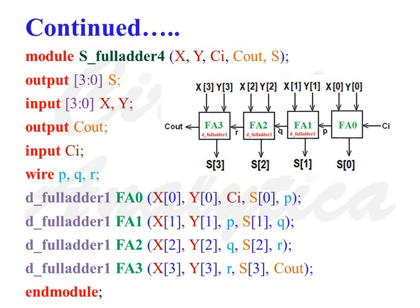Then next line d_fulladder1 space FA0 inside bracket X[0], Y[0], c_i, s[0], p close bracket semicolon. This defines the instantiation of the first 1-bit full adder labeled as FA0.